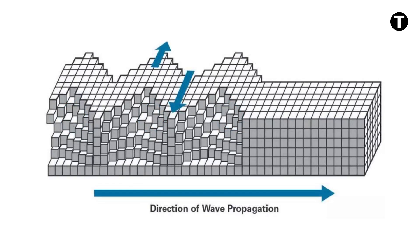Love waves are horizontally polarized surface waves. They result from the interference between many S-waves. They are slower than P- and S-waves, but faster than Rayleigh waves.